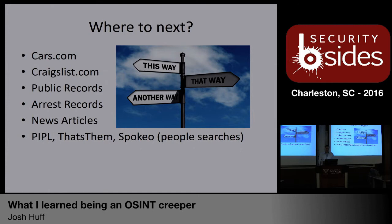Where do we go next? You can check cars.com, Craigslist, public records, arrest records, news articles — basically anything that might give you more clues to drill into about that particular type of vehicle. Coming from Facebook, you probably know slightly about what region it came from as well. People.com and Spokeo are really excellent people searches that you can get some decent information out of before you hit their paywalls.